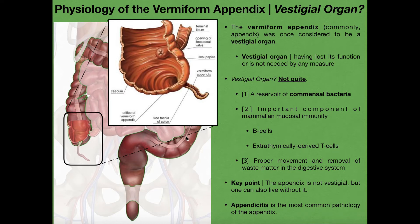The way this fits with immunity is that whenever contents of the GI tract move from the ileum through the ileocecal valve into the cecum, those contents can be monitored by the immune cells in the appendix. If there's anything dangerous or pathogenic, the B cells and T cells in the appendix will sense it and mount an immune response against the pathogen. This is one way the appendix helps keep pathogenic bacteria down in the colon and maintains a higher population of commensal bacteria.